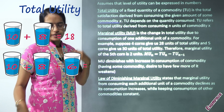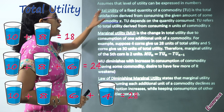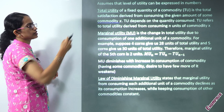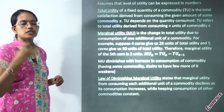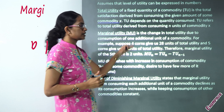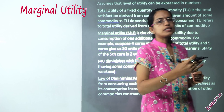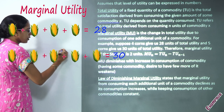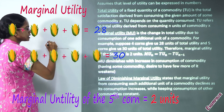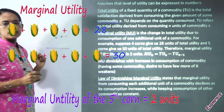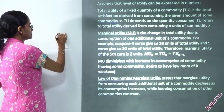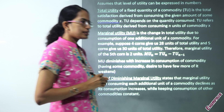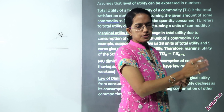Total utility is derived from a fixed quantity of a commodity that you are consuming — it represents the total satisfaction from that given quantity. Total utility is a function of the quantity consumed. Marginal utility, however, is the change in total utility caused by one additional unit. With every additional unit of the commodity, the change in total utility is registered as the marginal utility.